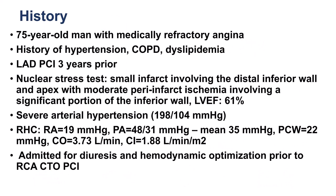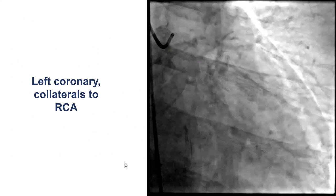The patient was a gentleman with medically refractory angina, previous PCI of the LAD, and he was found to have inferior ischemia with an RCA CTO. His ejection fraction was normal. He came for PCI of the RCA CTO, but he had significant hypertension as well as high wedge pressure, so he was admitted for controlling the blood pressure and diuresis prior to PCI of the RCA CTO.